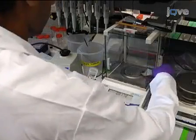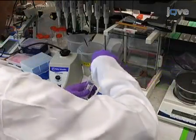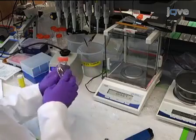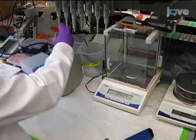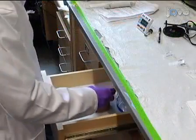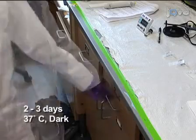To begin this procedure, prepare a 0.5% weight solution of the photoinitiator Irgacure 2959 or I-2959 in PBS. Mix and incubate for two to three days in the dark at 37 degrees Celsius.